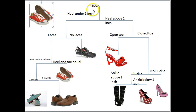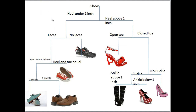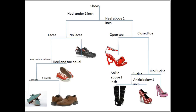So let's say I have this unknown shoe. I use this cladogram to make decisions — it's a shoe, the heel is under one inch so I go left, it has laces, and the heel and toe are equal. That gives me down to the red Converse — done. That is how we make a key. This is the exact same process we use for insects, where we simply break them up like this.